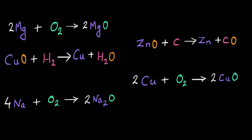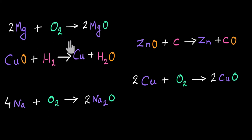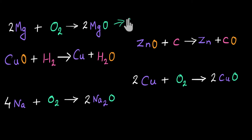Let's look at a few examples and see if we are able to identify oxidation reactions and reduction reactions. Why don't you pause the video and see it for yourself first? In the first example, magnesium is reacting with oxygen to give magnesium oxide. Oxygen is getting added to this metal, so this reaction is going to be oxidation — oxygen is getting added.